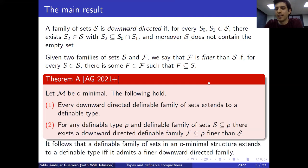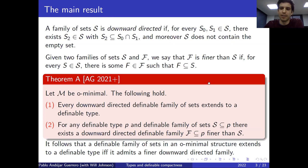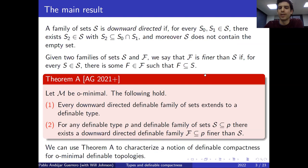This is connected to something called pro-definability of types that people like Pablo Cubides, Vincent Jé, and Martin Hills are studying. But rather than getting into that corollary, I want to get more topological and talk about how we can use Theorem A to characterize a notion of definable compactness for an o-minimal definable topology.